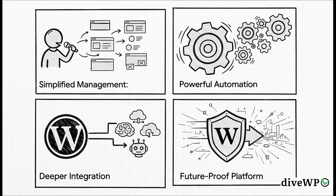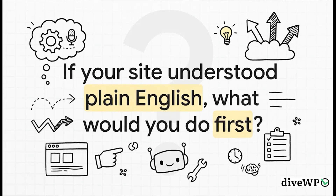So what's the big picture here? What should you take away? First, this is all about simplifying site management for everyone. Second, it unlocks incredibly powerful automation for those complex tasks. Third, it connects WordPress to this massive, growing universe of AI tools. And finally, and maybe most importantly, it makes WordPress a truly future-proof platform, ready for whatever comes next in the world of AI. Once that barrier of clicking through menus and dashboards is completely gone, and your website can just understand what you want, the possibilities are pretty much endless. What's the first tedious, annoying task you would hand over to your new AI assistant?